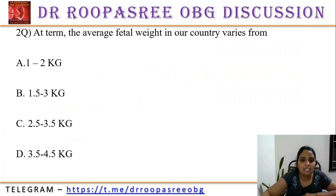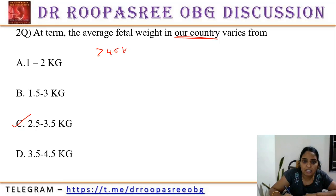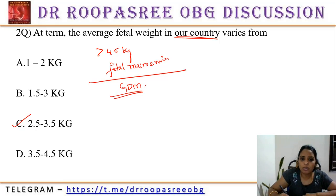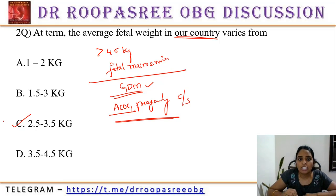At term, the average fetal weight in our country varies from 2.5 to 3.5 kg. When fetal weight is greater than 4.5 kg, it is known as fetal macrosomia. This is seen in gestational diabetes mellitus, and for 4.5 kg, ACOG preferably recommends caesarean section. So average weight is 2.5 to 3.5 kg.